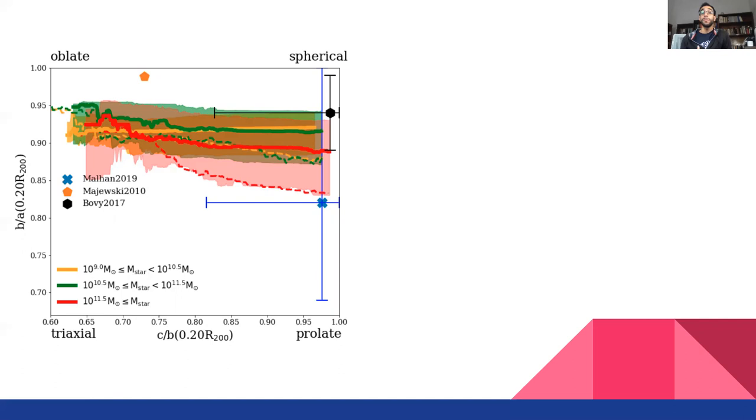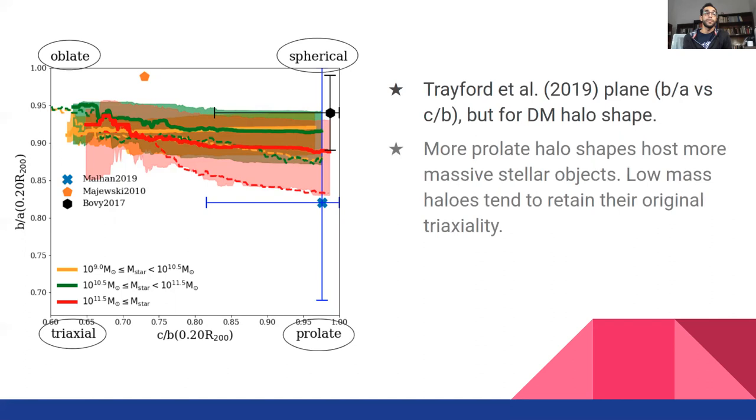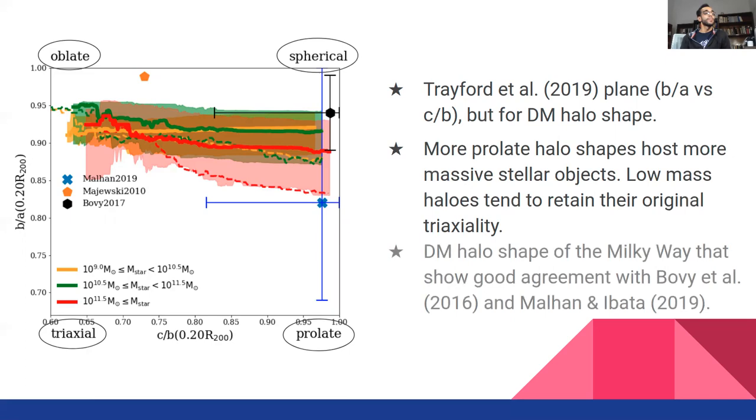There is a rather statistically weak trend for more prolate halo shapes to be found hosting more massive stellar objects. We also show here some observational constraints for the dark matter halo shape of the Milky Way at different radii.